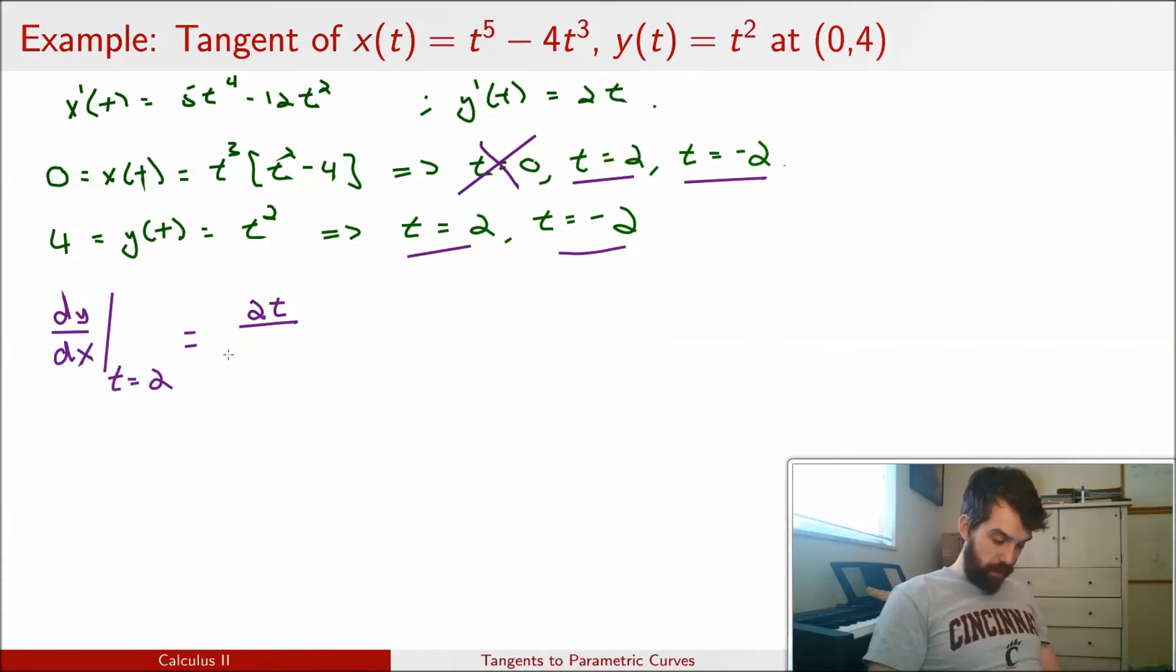And all of this evaluated at t equal to 2. I'm going to make my life just a little bit easier by cancelling a t from the top and the bottom. So this is 2 divided by 5t cubed minus 12t evaluated at t equal to 2.